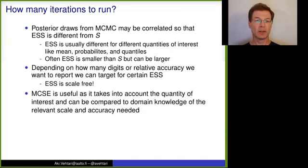On the other hand, Monte Carlo standard error is also useful as it takes into account the quantity of interest and we can compare it to domain knowledge. So we might also see that based on what we are estimating, like the temperature increase, that there's no need to go for higher accuracy than 0.1 degrees.